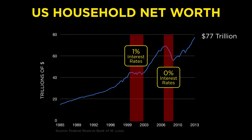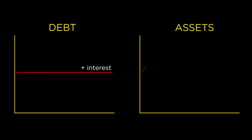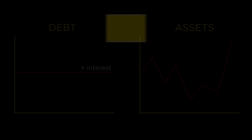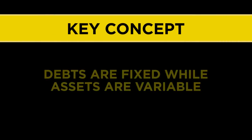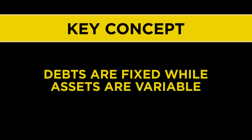These declines in total net worth lead to this observation: debts are fixed. When you take on a debt, there it sits, growing larger and larger until you make payments on it. Debts do not vary with general economic conditions or whether you get a raise or lose your job. Assets, on the other hand, are variable — sometimes gaining and sometimes losing value. This leads to the next key concept of the crash course: debts are fixed while assets are variable.